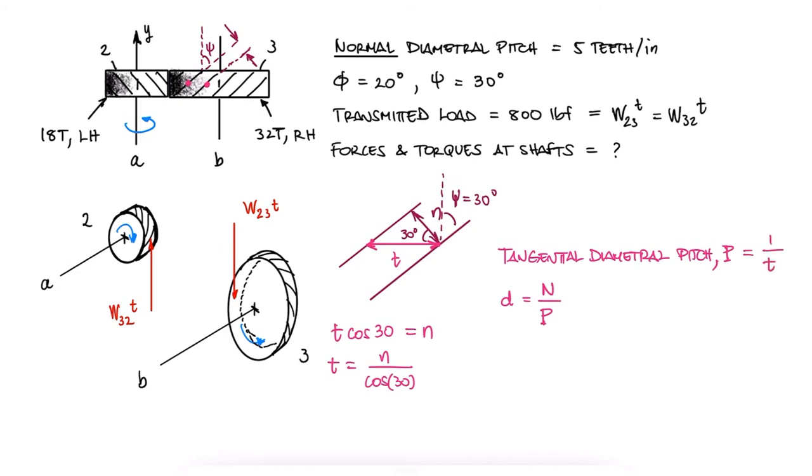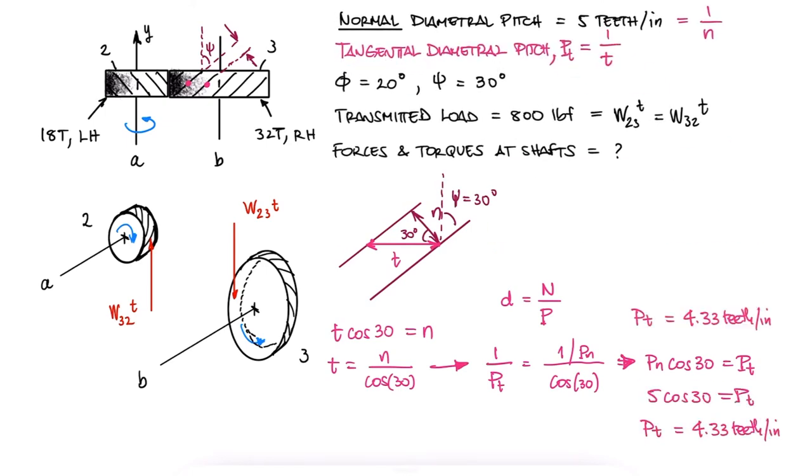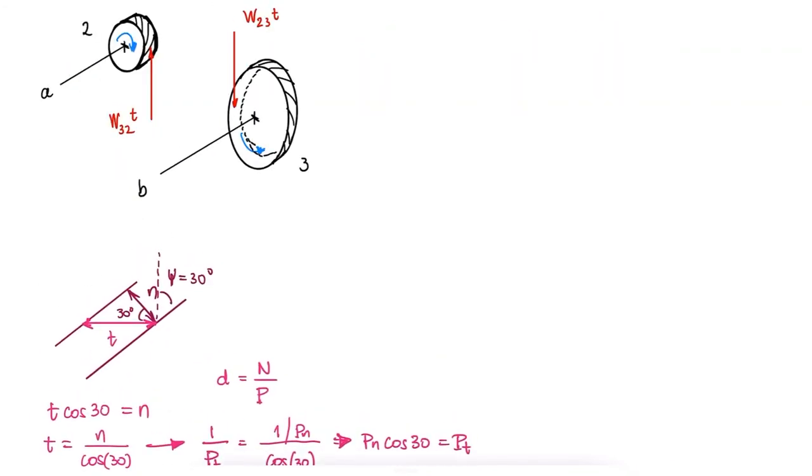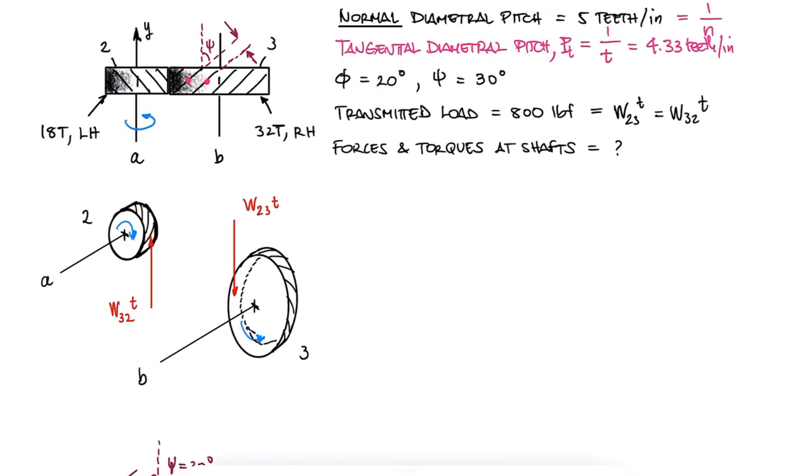We can use the helix angle information to find t in terms of n, or the tangential diametral pitch in terms of the normal diametral pitch. With a normal diametral pitch of 5 teeth per inch, the tangential diametral pitch would be equal to 4.33 teeth per inch.